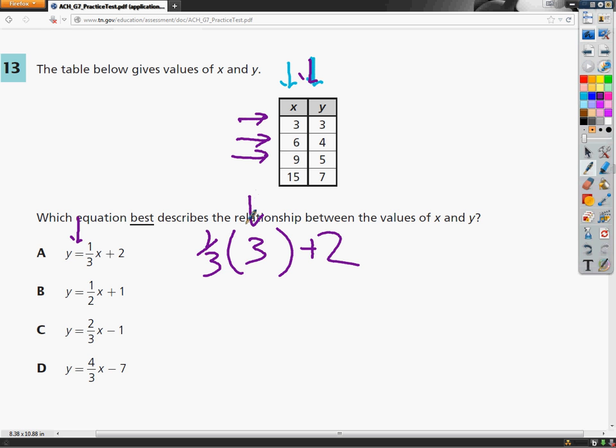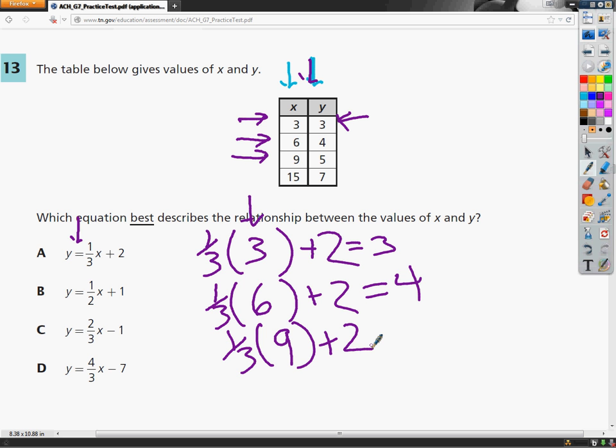When I plugged in a 3, my answer was 3. That's exactly what it's supposed to do. But don't get too excited yet. We've got to make sure they work for all of them. 1 third and I'm going to plug in a 6. I do 1 third and I plug in 6 there plus 2 and I get 4. Things are looking good. I'm going to try another one, 1 third, plug in a 9.